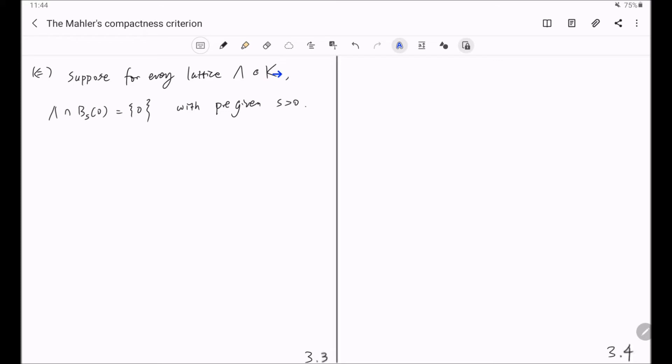We want to show that K is precompact, and to this end, we will first prove the first claim that one can find a basis b_1 to b_d in lambda that belongs to a given ball of radius depending on s and the dimension d.